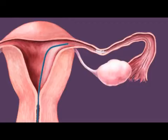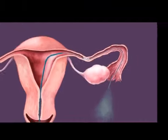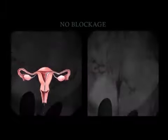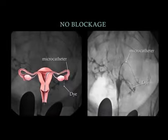A small micro-catheter is then fed through the first catheter and over the guide wire out the fallopian tube. Dye is sent through the micro-catheter. A new x-ray should show the dye flowing out the opened end of the fallopian tube.